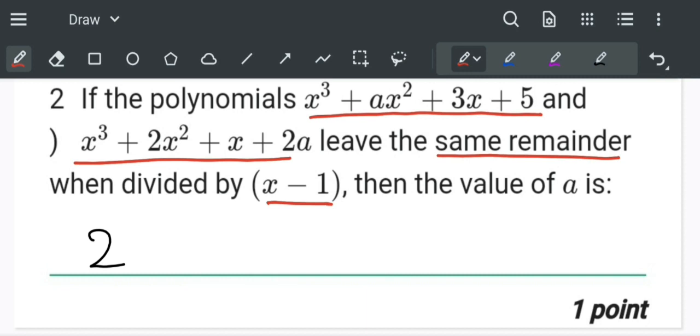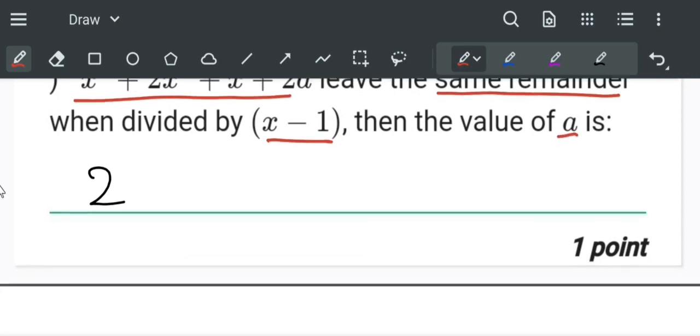Let us first divide the first equation by x minus 1. The first equation is x³ + ax² + 3x + 5.